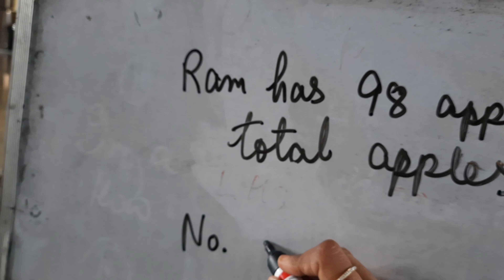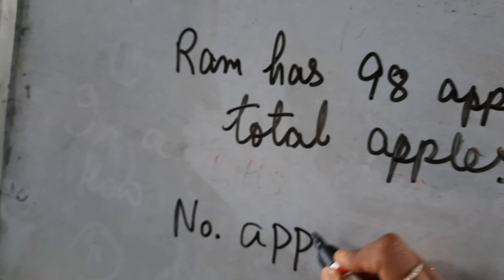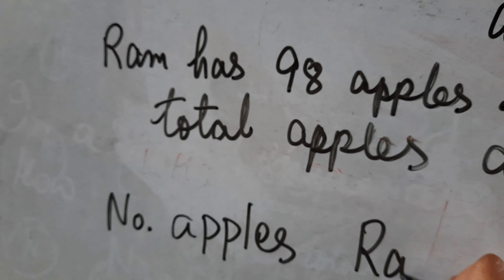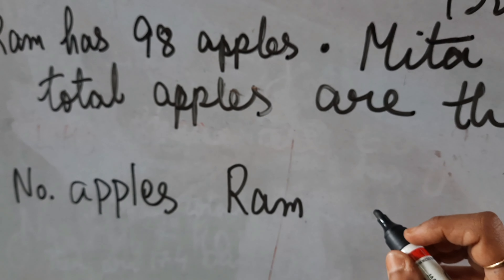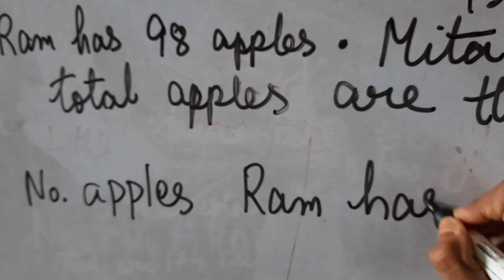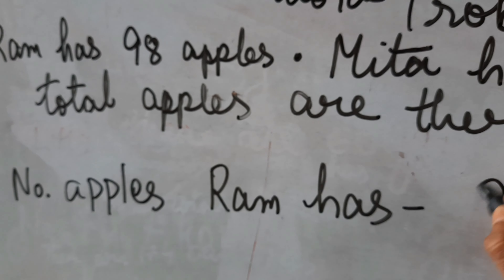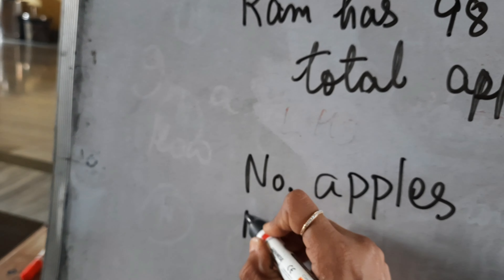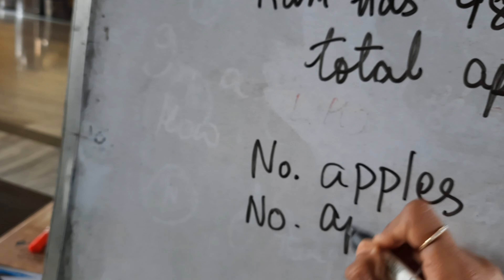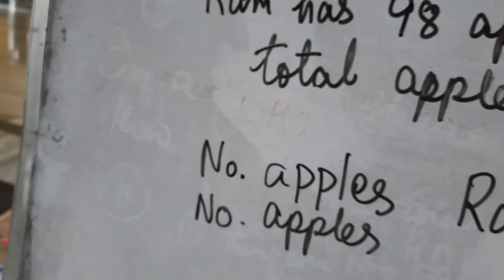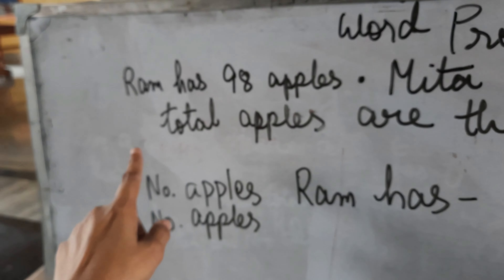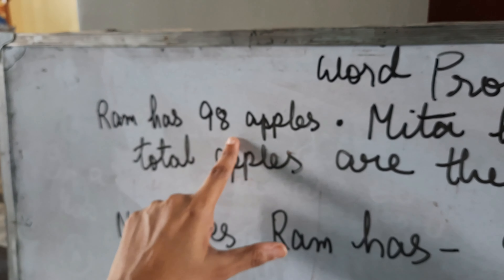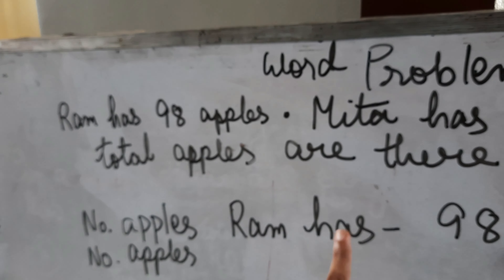What does Ram have? Ram has 98 apples. So number of apples Ram has — and here you will write 98. Then again you will write: number of apples Ram has. Ram has 98 apples.